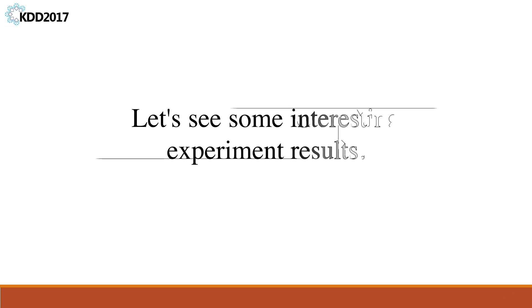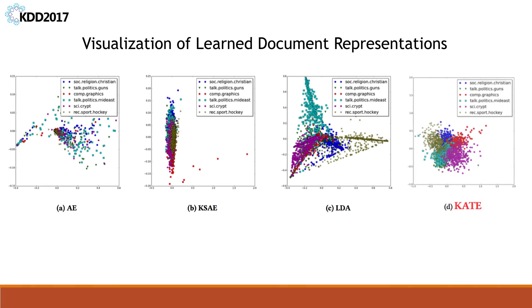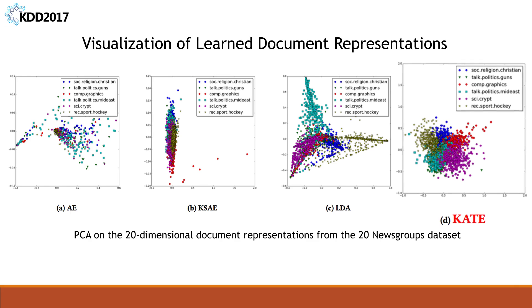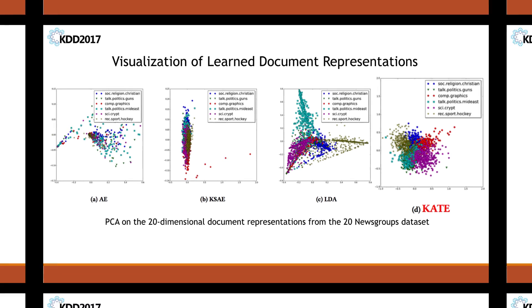Let's see some interesting experimental results. Here we show the PCA projections of document representations learned by various models taken from the six main groups in the 20 News Groups dataset. KIT automatically clusters related documents in the same group, and it can easily distinguish the six different groups. The effectiveness of learned document representations has also been verified in several downstream tasks including document classification, regression, and retrieval.